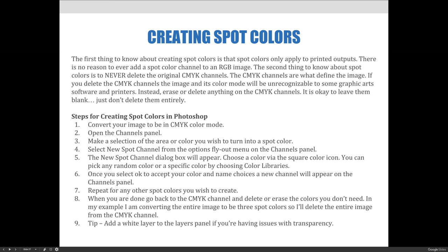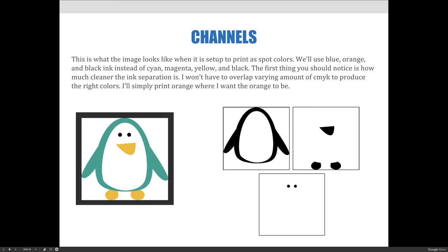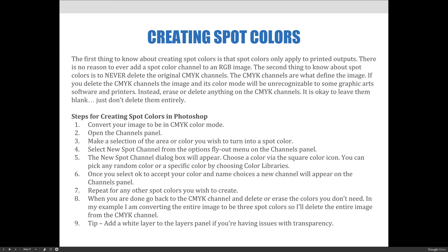We're going to talk about making spot colors with this image, where it's better to print three colors instead of four. But note: you don't have to convert an entire image. For example, a photograph of Santa Claus with a Coke bottle — the whole image could be CMYK, but the Coke bottle itself could be changed to a spot color. You can have a combination of CMYK and spot colors in the same photograph if you want.